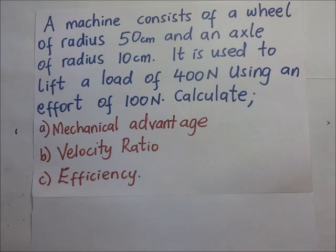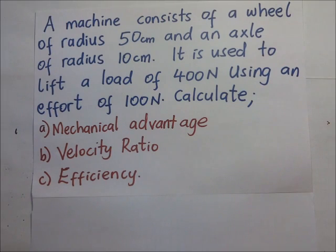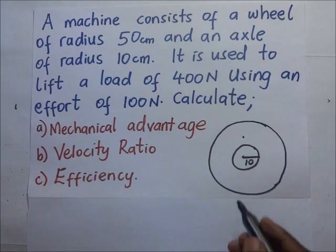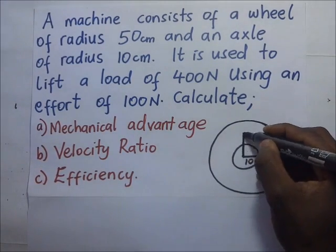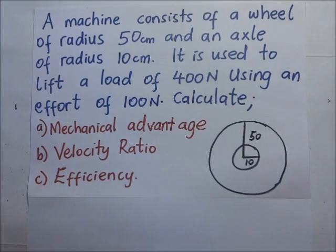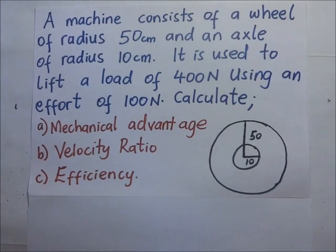A machine consists of a wheel of radius 50 centimeters and an axle of radius 10 centimeters. It is used to lift a load of 400 newtons using an effort of 100 newtons. Calculate the mechanical advantage, the velocity ratio, and the efficiency. We begin by drawing a sketch: the axle radius is 10 centimeters, the wheel radius is 50 centimeters, the load is 400 newtons, and the effort is 100 newtons.